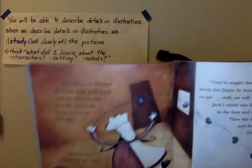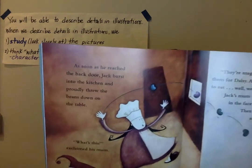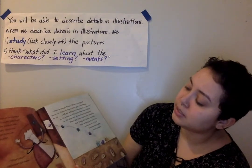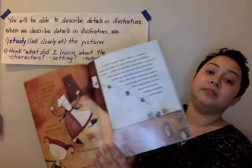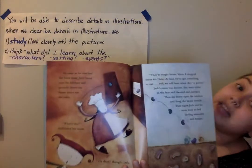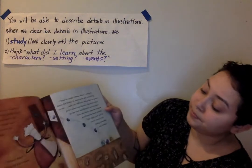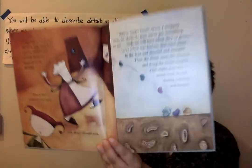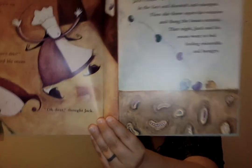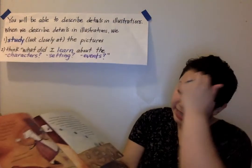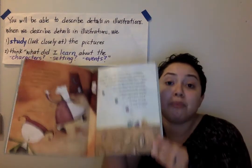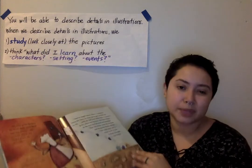Let's look at the next page. We're going to study closely and think: what did I learn? On this page I notice that mom looks panicked or upset — her mouth is wide open, it's almost like she's falling backwards. And looking closely right here, I noticed that deep in the soil there are all kinds of buds, and I wonder if these buds are going to help the beans grow. I guess we're going to have to see.